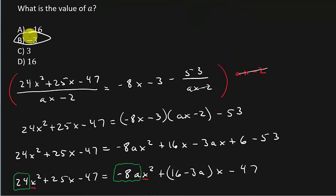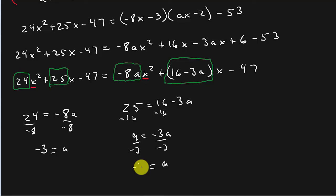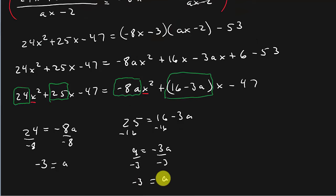Now you're probably wondering, what if instead of setting the coefficients of the x squared terms equal to each other, what if I set the coefficients of x equal to each other? Well let's try that. So 25 equals 16 minus 3a, so if I subtract 16 from both sides I get 9 equals negative 3a, divide both sides by negative 3, and once again we get a is equal to negative 3.